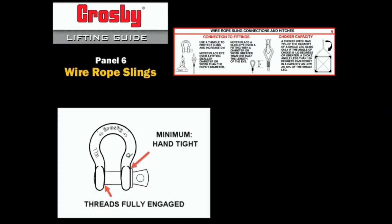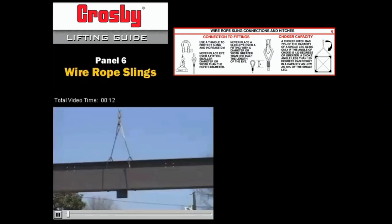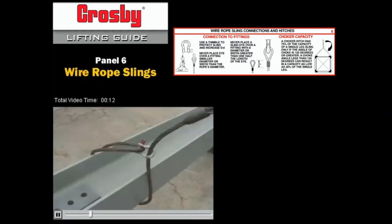Whenever a screw pin shackle is used with any sling or hitch, always make sure the pin is tight before each lift. If a choker is formed using a shackle, the pin of the shackle should always go through the eye of the sling. This is wrong. This is correct.